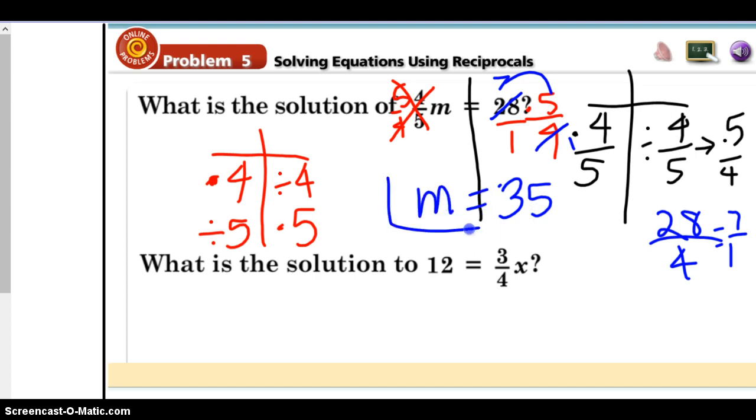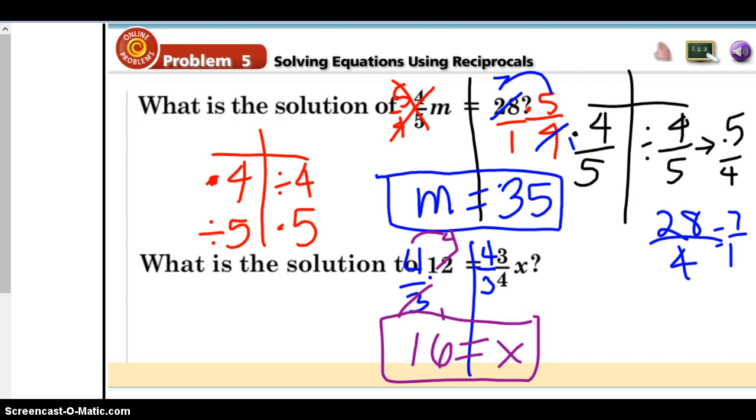Now, if you want to do the 28 times 5, all over 4, you can, and simplify it later. Totally cool! Well, if you don't like me simplifying beforehand, I'm not offended. Do it your own way, but know that the answer comes out to be 35. So then, try this one. What is the solution to 12 equals 3 fourths x? I want you to pause me, try it on your own, and come back and check. Alright, so I times by 4, divide by 3, times by 4, divide by 3. Look at, I can simplify right away. 1 and 4. Or, I could do 4 times 12, divided by 3. Either way, I end up with 16. If that makes total sense, awesome! If it doesn't, that's why we're going to use class time to work.